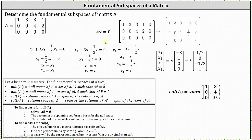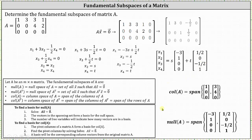Therefore, the solutions to the equation matrix A times vector x equals a zero vector are all vectors x in the form of s times the vector (−3, 1, 0, 0) — where these entries come from the coefficients of s in order from x₁ to x₄ — plus t times the vector (1/2, 0, −1/2, 1), where these entries are the coefficients of t in order from x₁ to x₄. Which means the basis for the null space of matrix A is the vectors (−3, 1, 0, 0) and (1/2, 0, −1/2, 1), and the null space of matrix A is equal to the span of these two vectors.